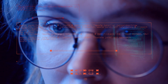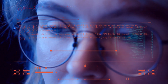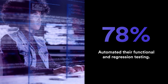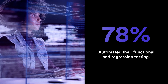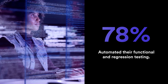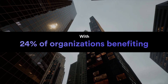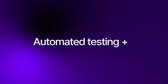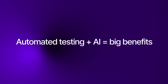Testing has been known to slow development to a crawl. This is why 78% of organizations have automated their functional and regression testing, with 24% of organizations benefiting from implementing automated testing. The adoption of AI can double it.